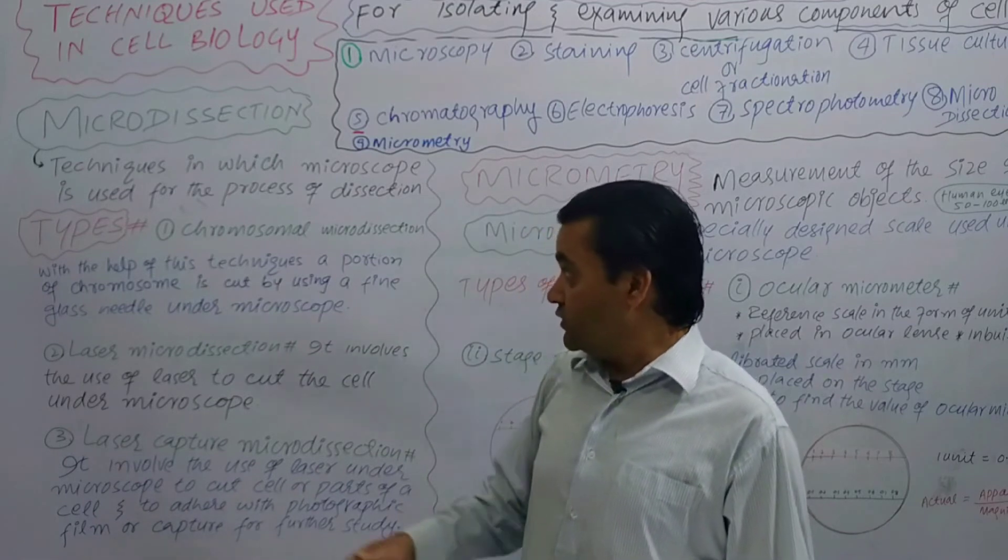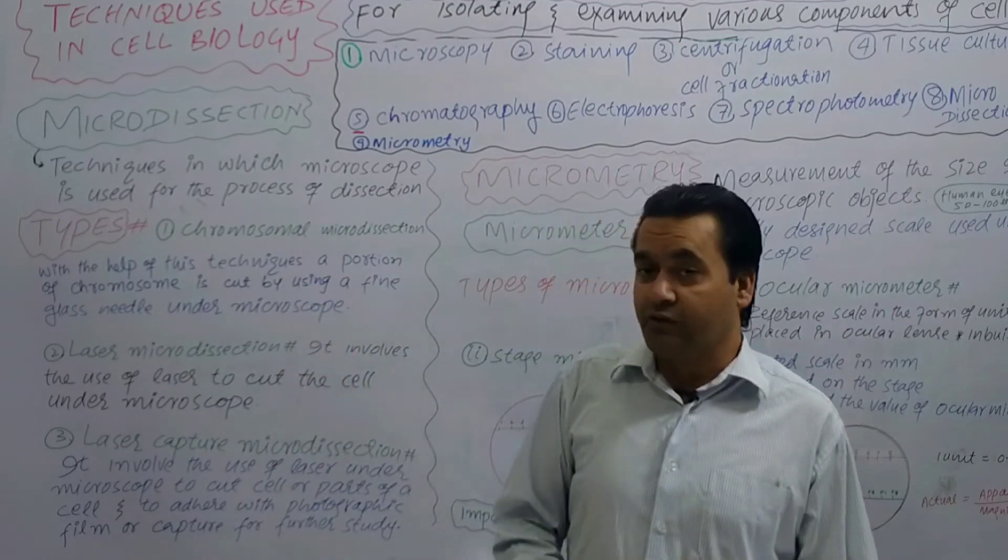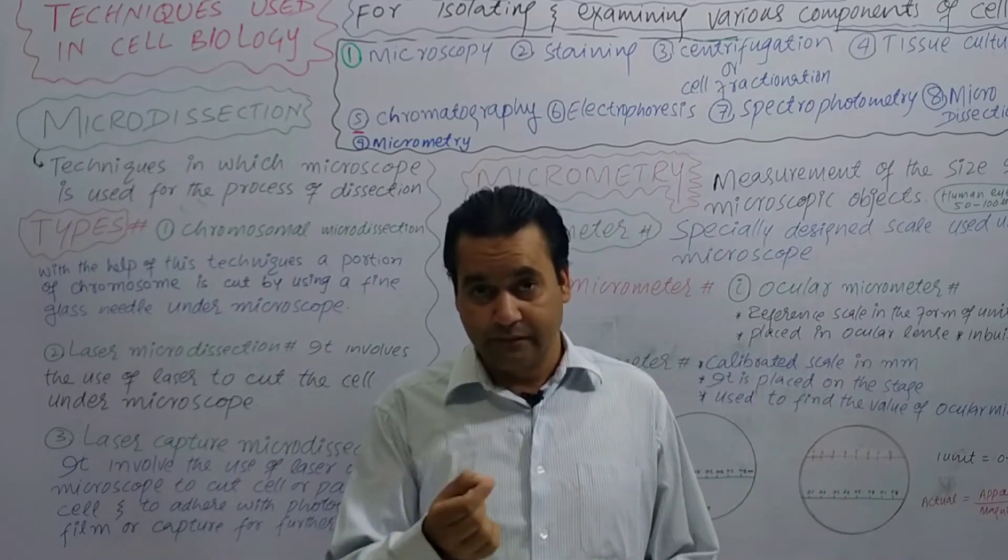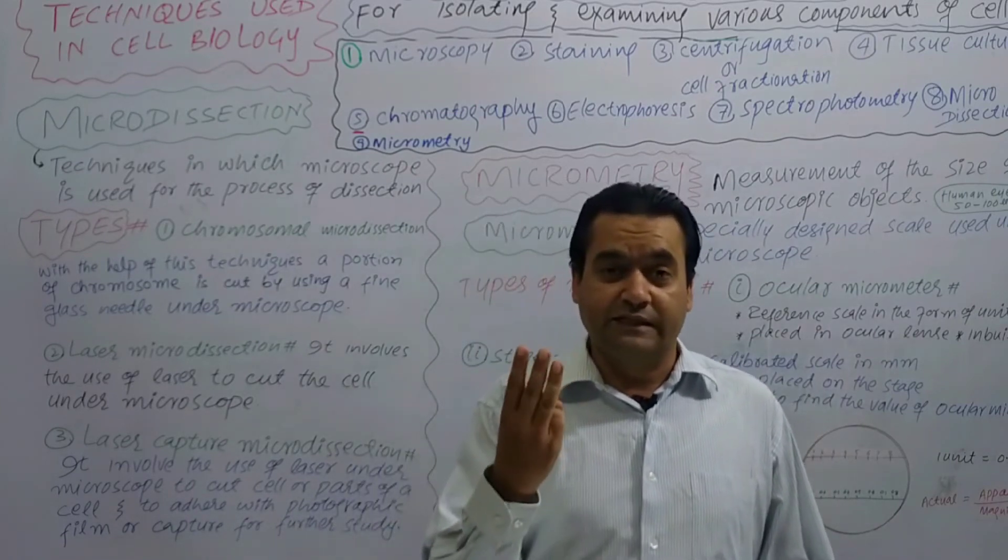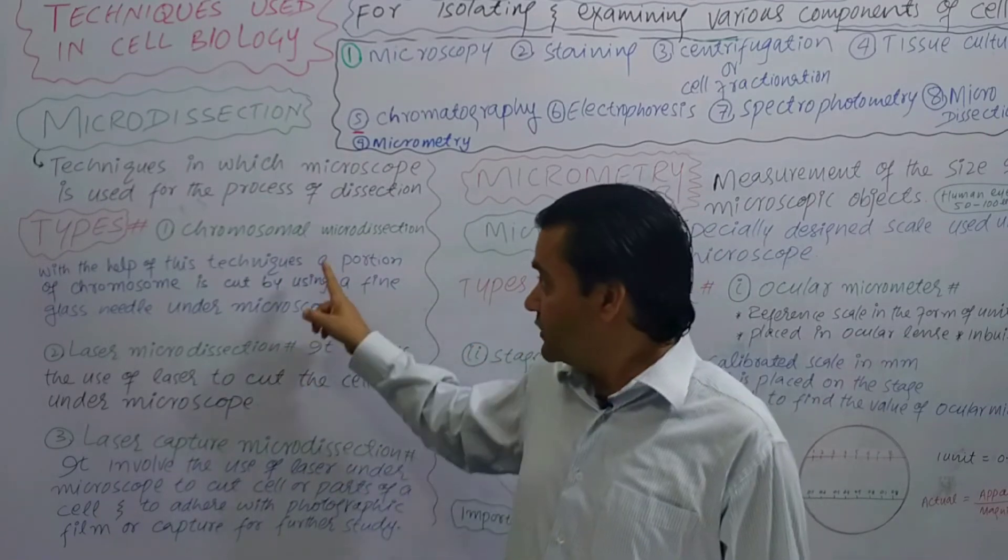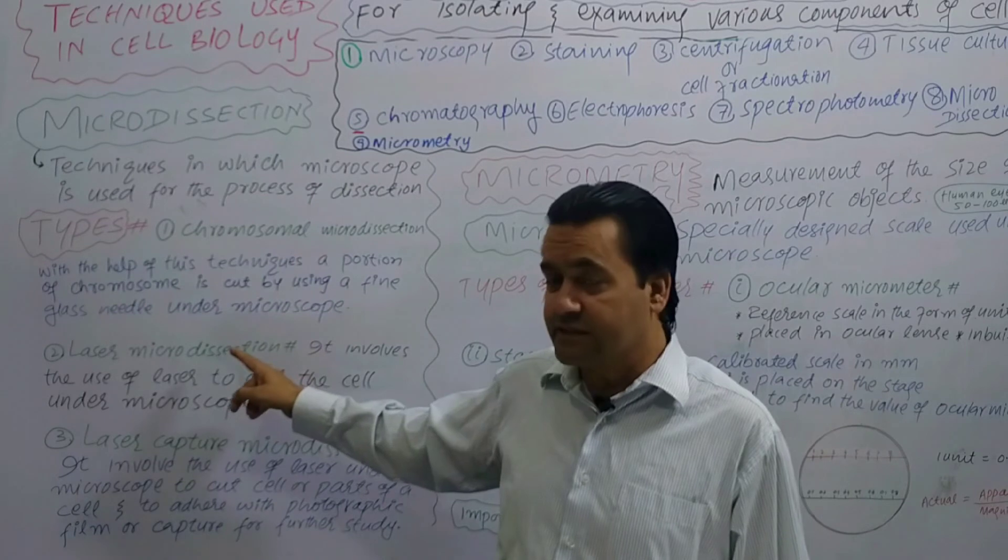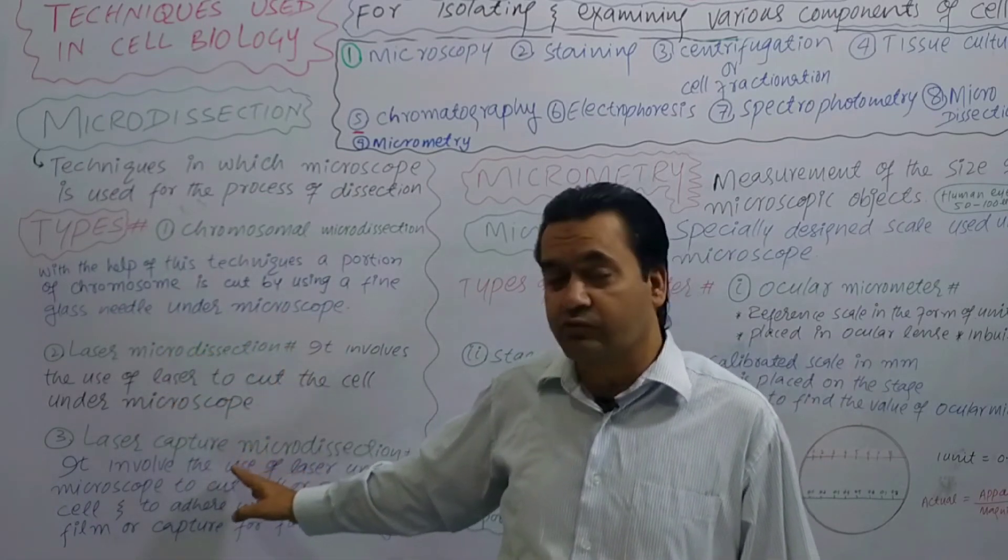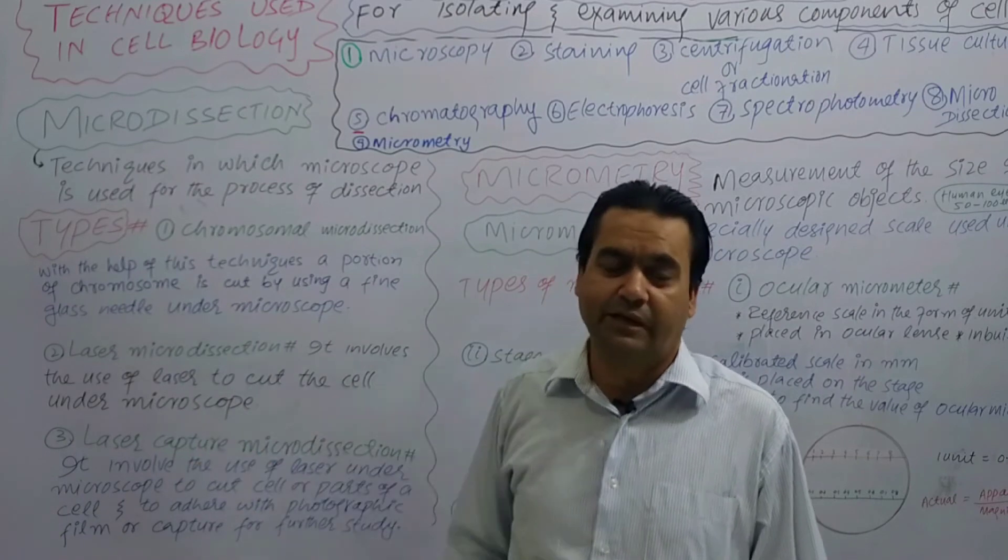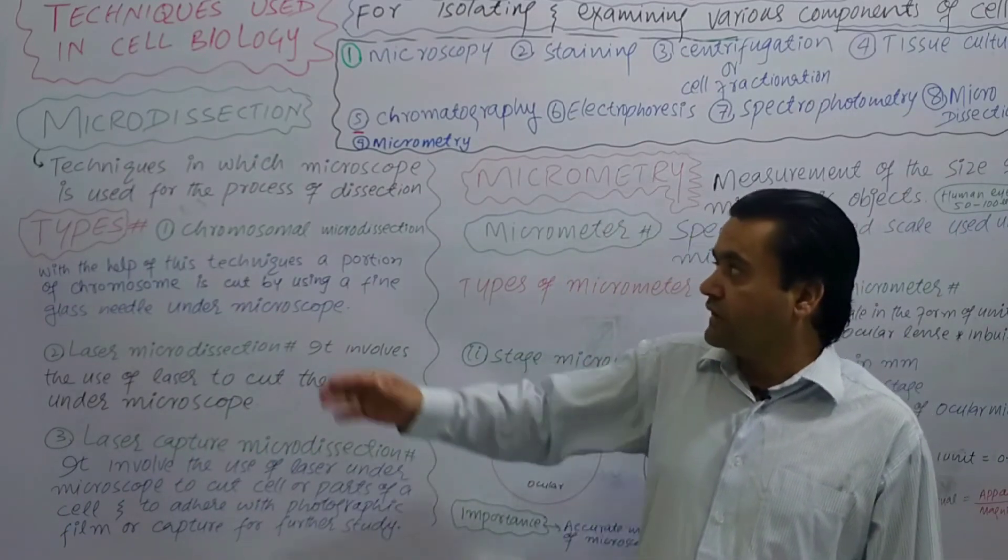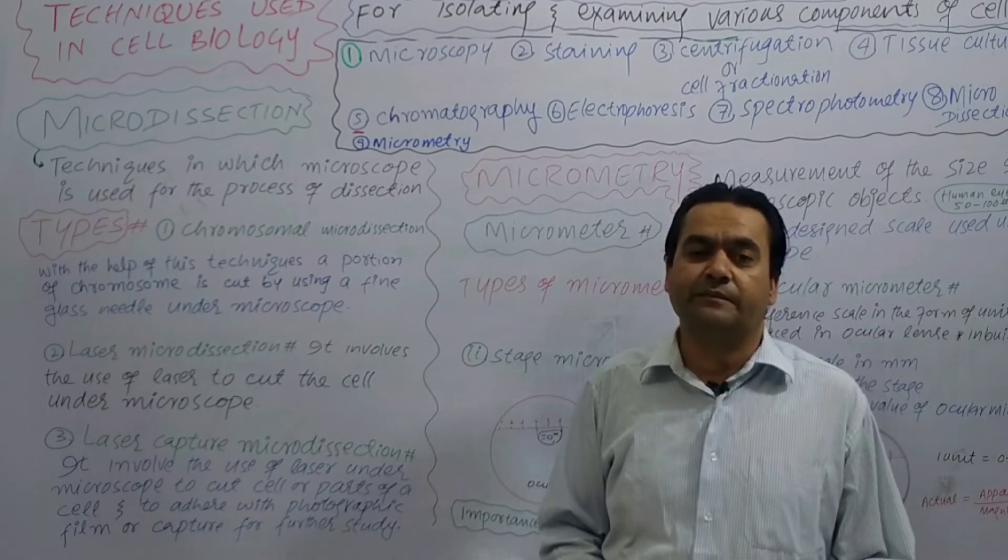This is micro dissection for cutting bacteria or small cells. The types are micro dissection, laser micro dissection, and laser capture micro dissection.